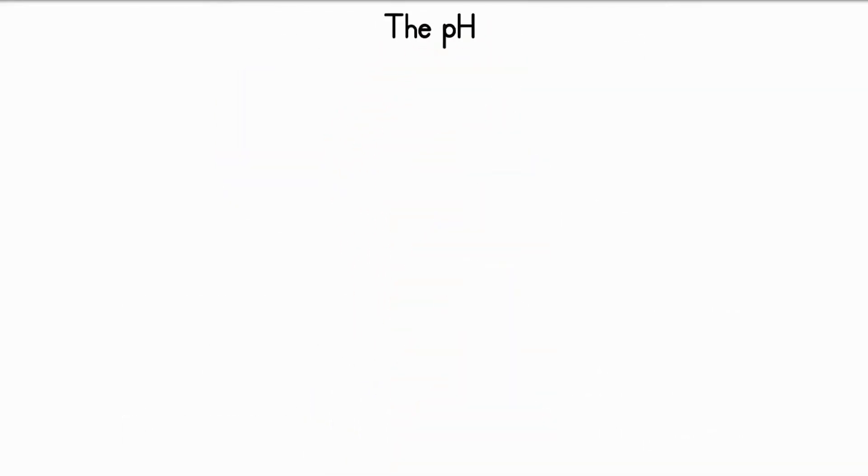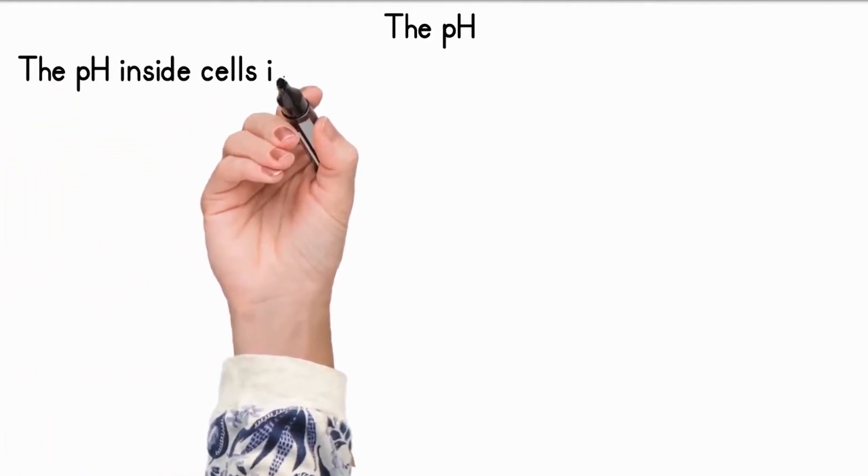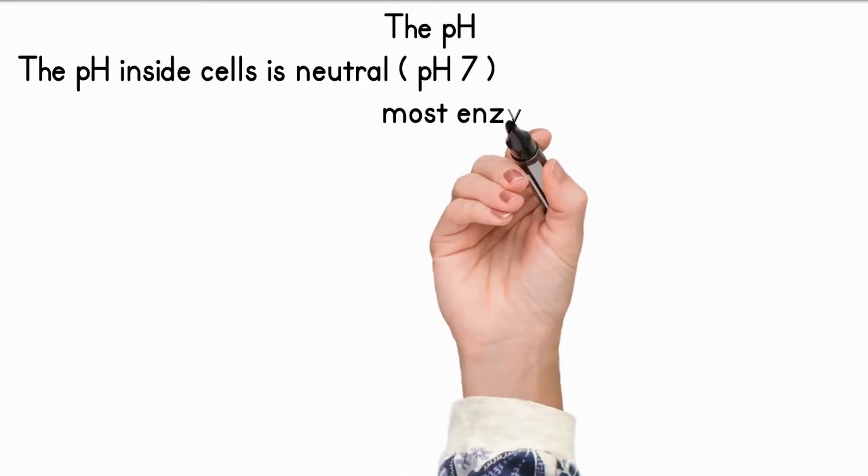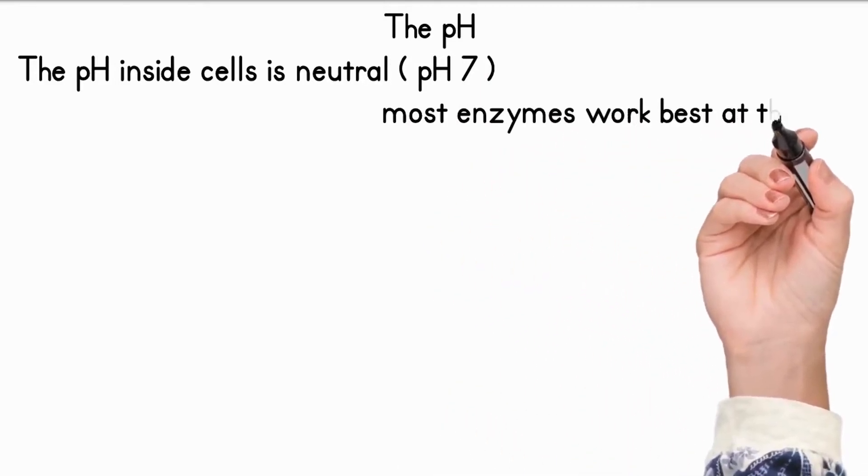The pH. The pH around the enzyme is also important. The pH inside cells is neutral, and most enzymes have evolved to work best at this pH.